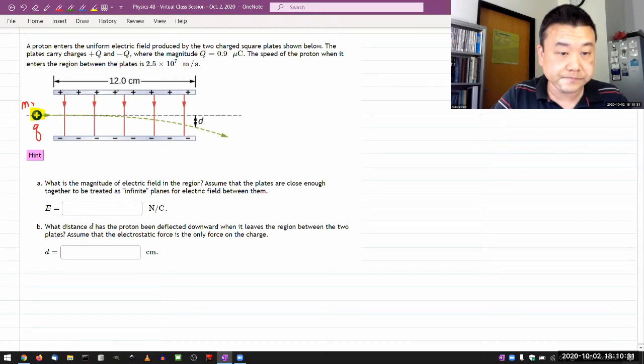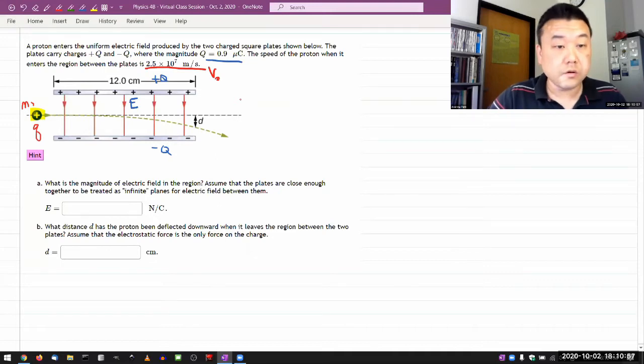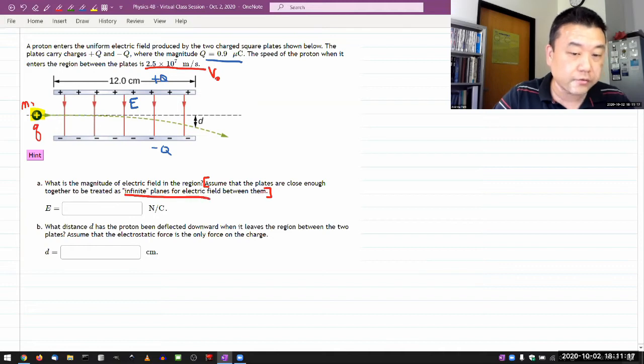The proton enters a region of uniform electric field. This is the electric field. The plates carry charge plus q and minus q, where the magnitude is given. The speed of the proton when it enters the region between the plates - okay, so it's giving me some speed. Let me label that as V0.